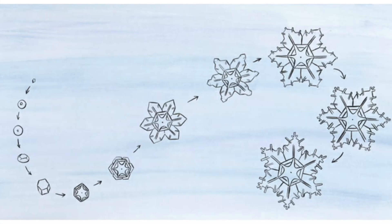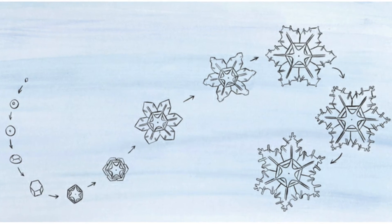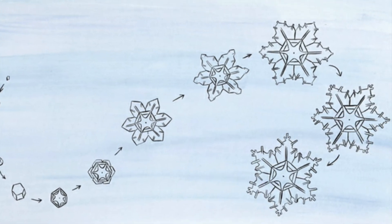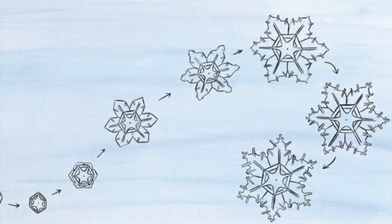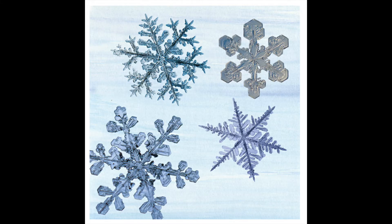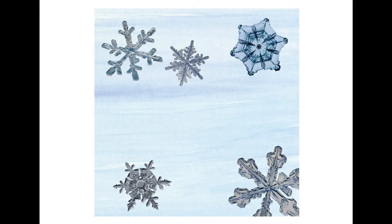Water vapor continues to stick to the crystal. Faster growth on the corners causes six branches to sprout. The branches keep growing, sprouting little arms of their own, and a beautiful snow crystal is born. As the snow crystal gets bigger and heavier, it starts to fall to earth. It keeps growing as it falls through the cloud, taking on its own special shape.